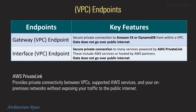Endpoints: Gateway Endpoint provides a secure private connection to Amazon S3 or DynamoDB from within a VPC — data does not go over the public Internet. Interface Endpoint provides secure private connection to many services powered by AWS PrivateLink, including AWS services or those hosted by AWS Partners. AWS PrivateLink provides private connectivity between VPCs, supported AWS services, and your on-premises networks without exposing traffic to the public Internet.